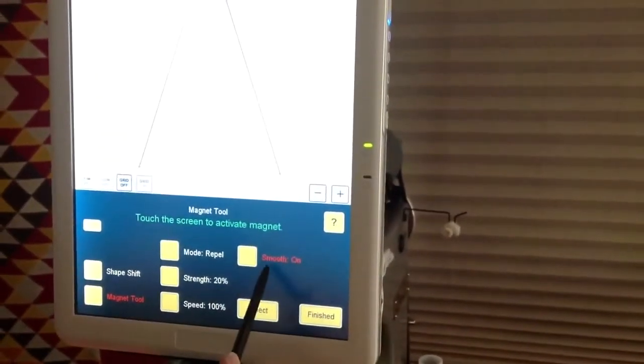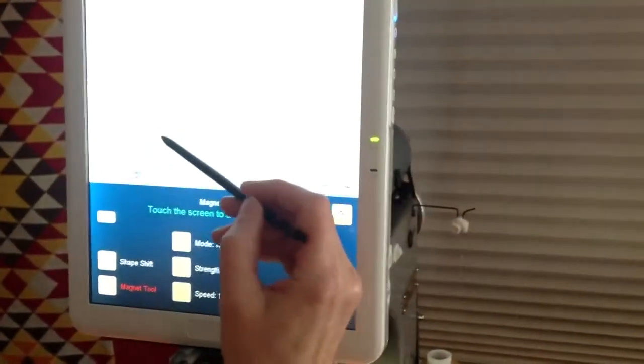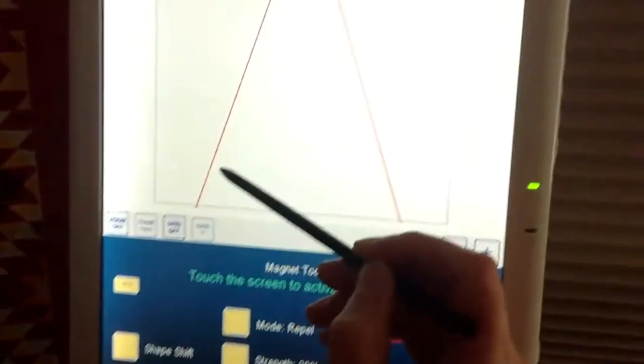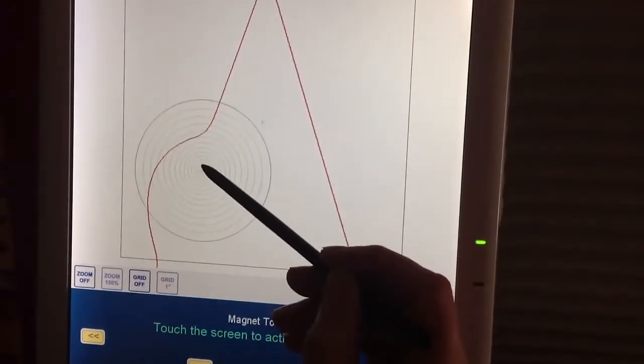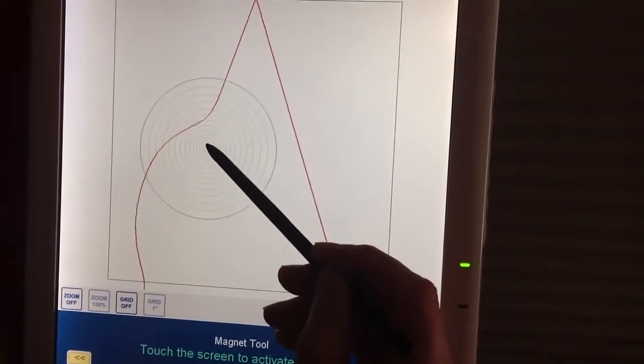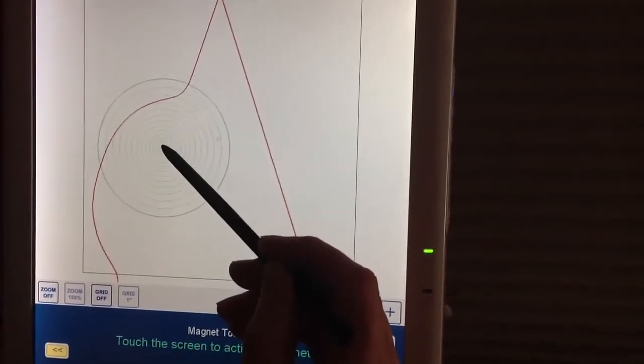I'm going to get the magnet tool. Right now smooth is on. Now I'm going to touch beside this line, and you can see the line is curving out smoothly. I'm dragging my stylus so it's moving the circle.